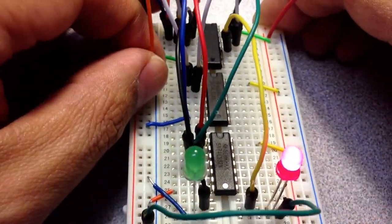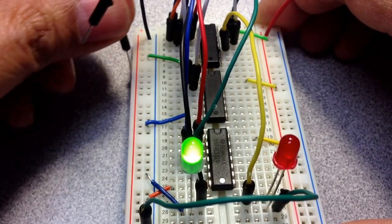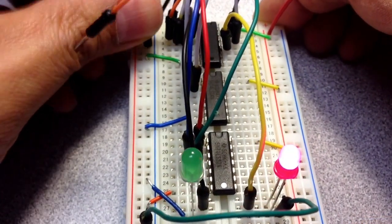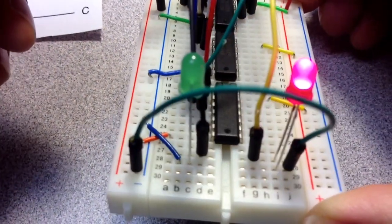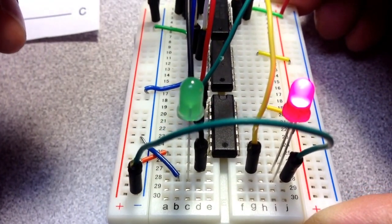Now we're going to do the opposite. We're going to ground A and keep. But again, notice that red light's on. Okay? So A is 0, B is 1, and we've got the correct output.